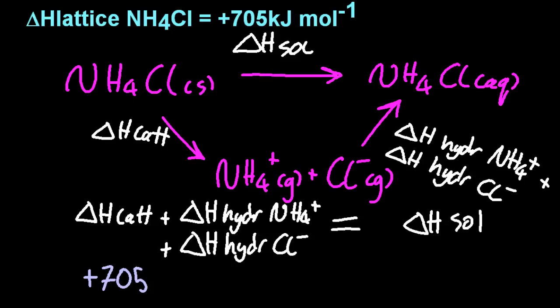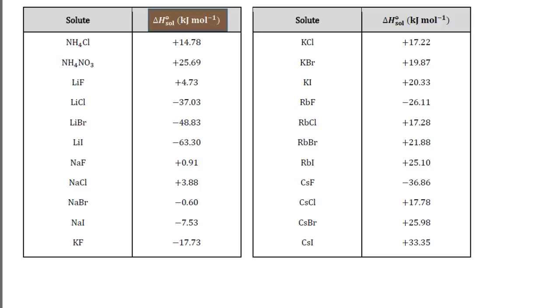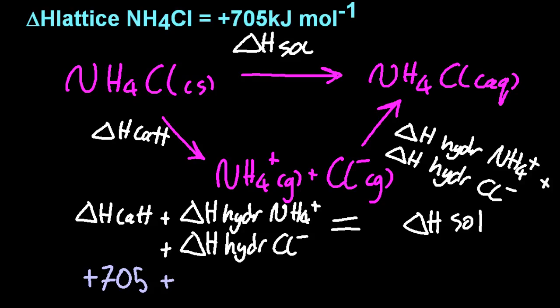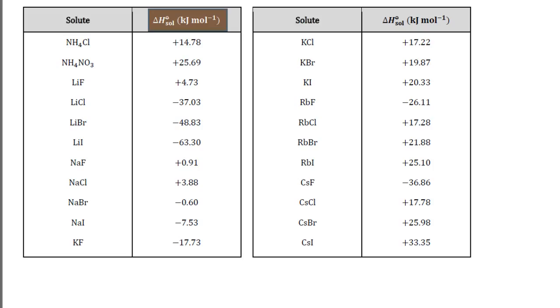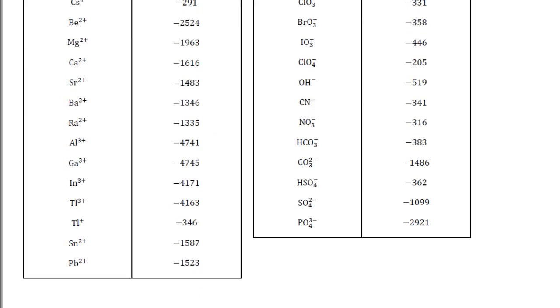So the lattice is given. It's plus 705. Looking in the data booklet, I can see delta H solution for ammonium. Oh, you know what? I wish the Terminator would come back in time and save me from chemistry. I wish I'd been a rock guard or something like that, a guitarist. Oh, back to the chemistry. And so I had the delta H solution for ammonium chloride. Pop that in there. Back to the data booklet.